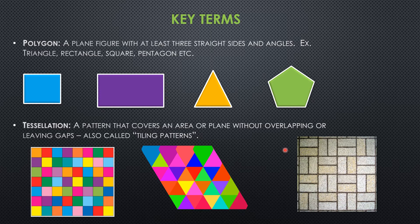Another example of tessellation is a brick pattern — you've probably seen this outside on the ground, in a backyard, on the street, or on some walls. We've got this pattern of rectangles that repeat and there are no gaps or overlapping at all.